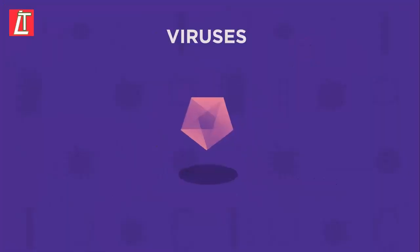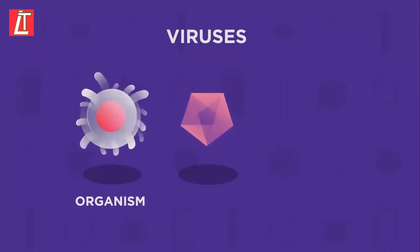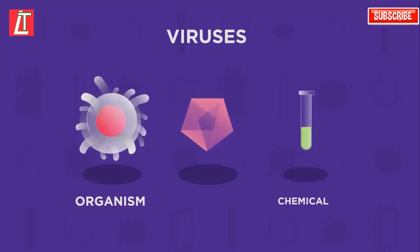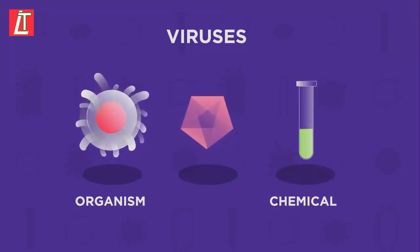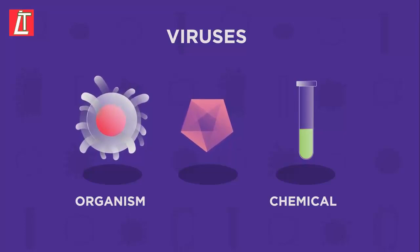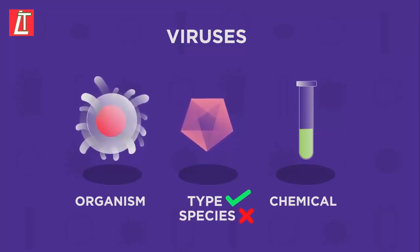As we just saw, viruses aren't made up of cells. In fact, they aren't really living. They are halfway between a living organism and a chemical. Because they aren't living, we say there are different types of virus rather than different species of virus.